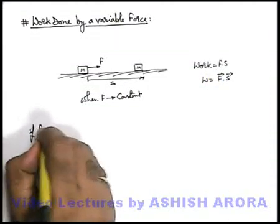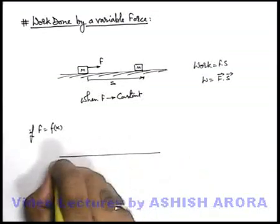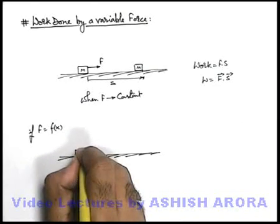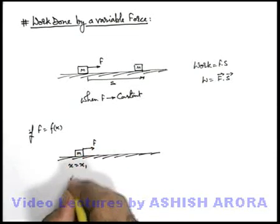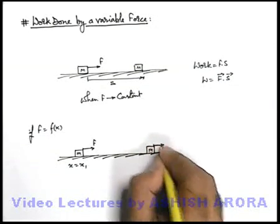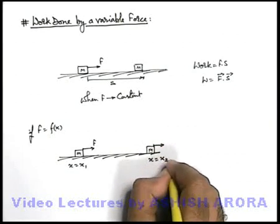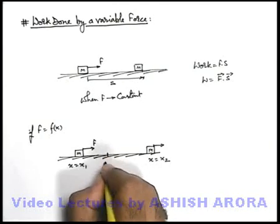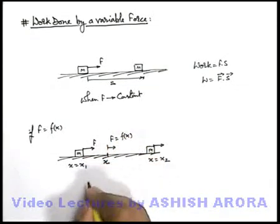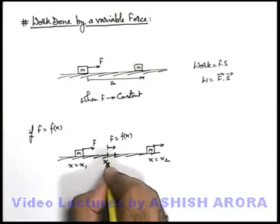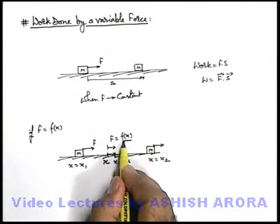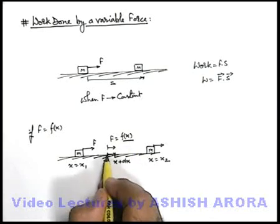Say we consider if force is given as a function of x, where x is the distance or displacement covered by a body. In this situation at a particular position, say x equal to x₁, the force is applied on the body, which is varying with distance x as it is changing. Work done will also continuously change, and we wish to calculate the work done when the body reaches position x₂. Now we can consider an elemental displacement from x to x plus dx — such a small displacement in which we can consider that the force will not change significantly, and is almost constant in the neighborhood of position x.